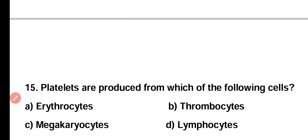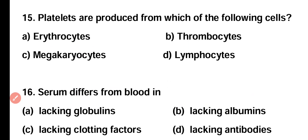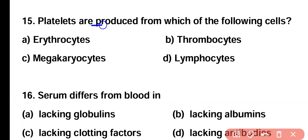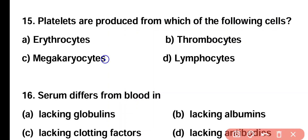Question number 15. Platelets are produced from which of the following cells? Erythrocytes, thrombocytes, megakaryocytes, or lymphocytes? Correct answer is option C. Megakaryocytes are the specialized cells present in bone marrow and they produce platelets.